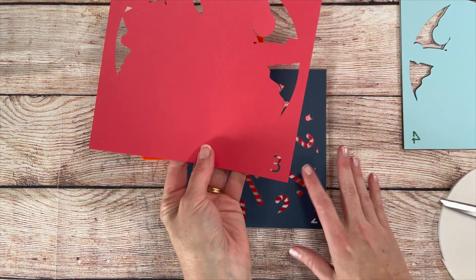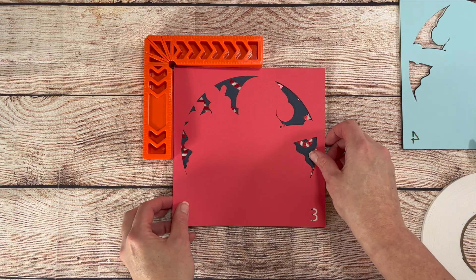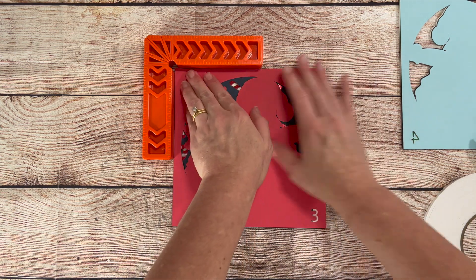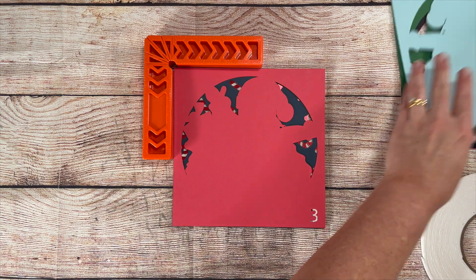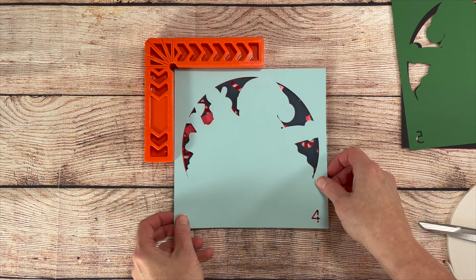On all my shadow box files, I number the layers at the bottom right-hand corner, so you'll know which layer should go next. This is really helpful to keep the layers in order for assembly, and also when you're cutting, you can match your paper color with the number so you don't accidentally cut a layer in the wrong color.